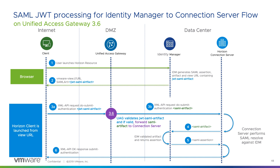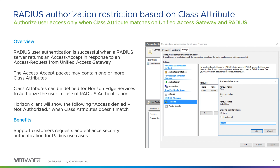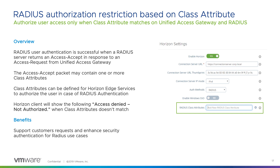As part of the RADIUS authentication method, we added the capability to restrict access based on class attributes for Horizon edge services. When IT administrators define RADIUS attributes on RADIUS servers, those attributes are returned as part of the Access-Accept packet sent to UAG. When RADIUS class attributes are defined on Unified Access Gateway, UAG performs validation to check if those attributes are present in the response. If the attributes don't match, the Horizon client shows an access-denied error to the user. This supports customer requests to leverage class attributes during authorization and enhances secure authentication for RADIUS use cases.